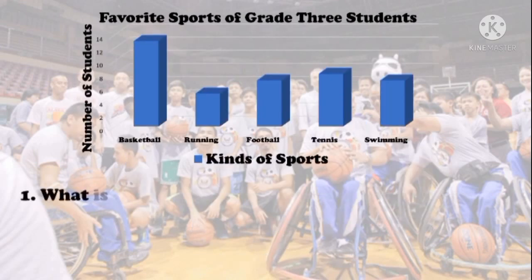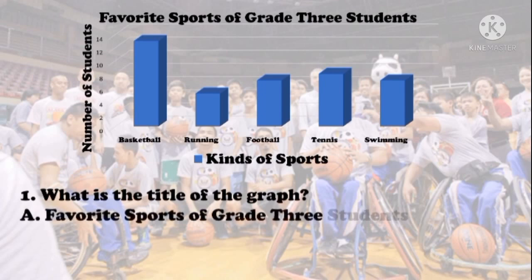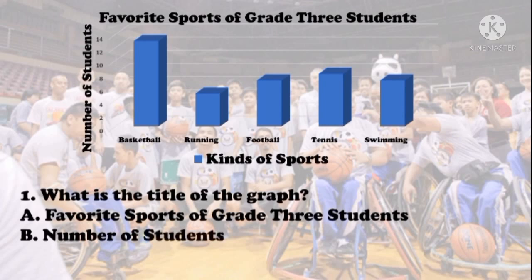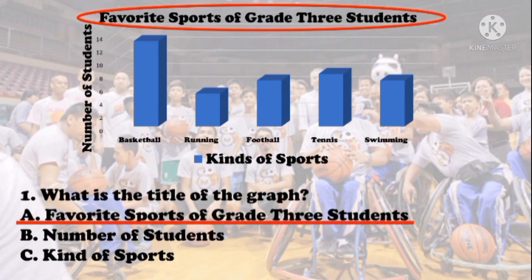Let us now answer the questions. First question: what is the title of the graph? The choices are: A. Favorite Sports of Grade 3 Students, B. Number of Students, C. Kind of Sports. Based on the graph, the answer is letter A — Favorite Sports of Grade 3 Students.